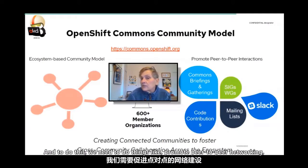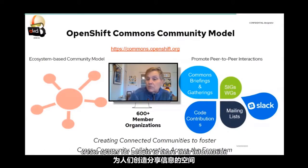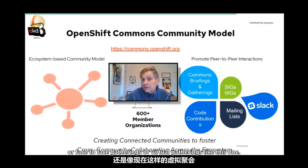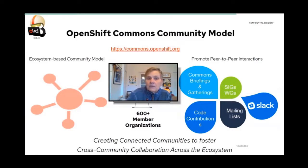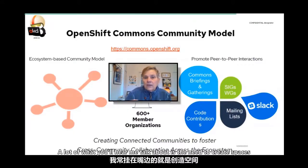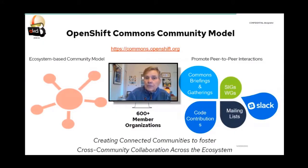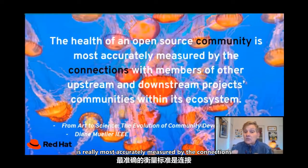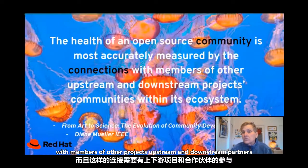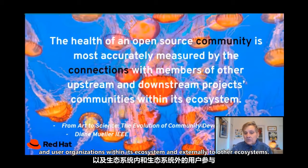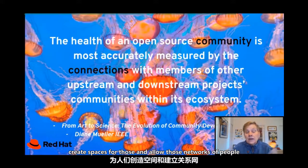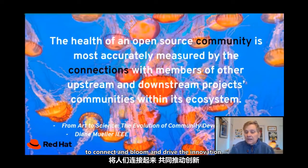I've worked through some new community models, but really what I emphasize is creating ecosystem-based community models to understand that it's about creating connections and cross-community collaboration across even ecosystems — that's really key to the success of our projects and the technologies we're trying to develop together. To do this, we need to promote peer-to-peer networking, create spaces for people to share information and connect, whether it's special interest groups, working groups, Slack, briefings, or face-to-face or virtual gatherings like this one.